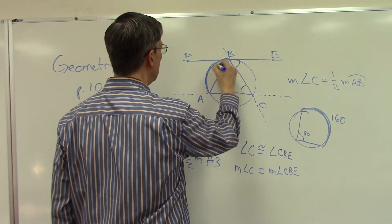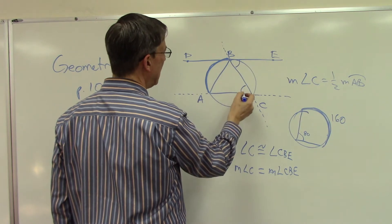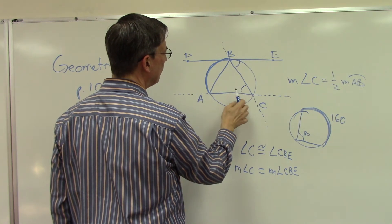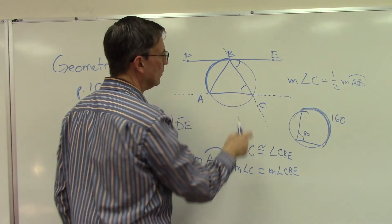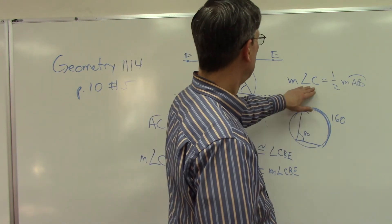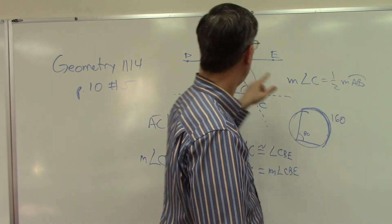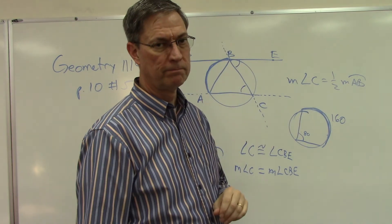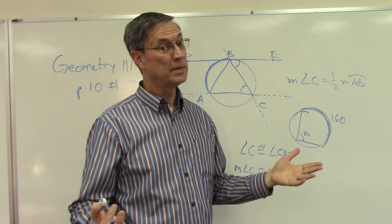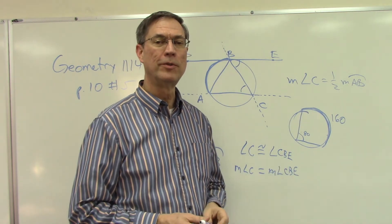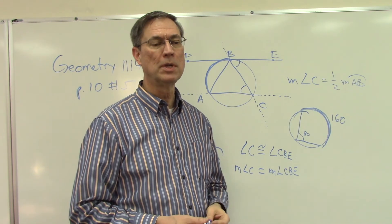This arc here is going to be exactly double this angle. Okay? So the angle is half of the arc. And again, the reason we can say that is, we just learned theorem 57, so we get to use it. Yay!